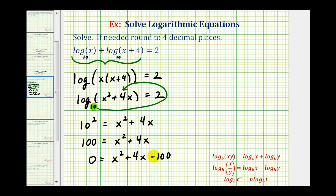Now unfortunately, there are no factors of negative 100 that add to positive four, which means to solve for x, we'll have to use the quadratic formula. When using the quadratic formula, we do need to remember that a is going to be equal to positive one, b is equal to positive four, and c is equal to negative 100.